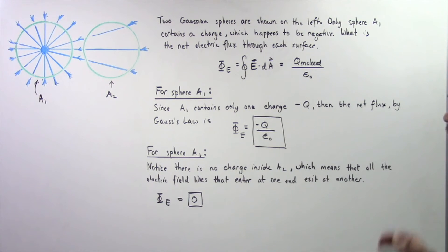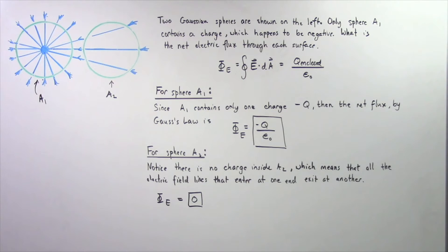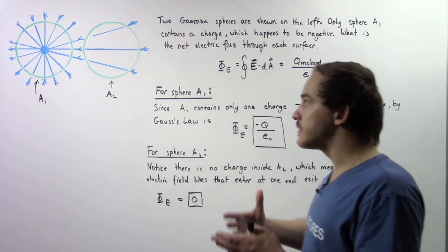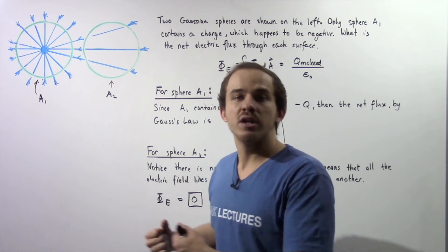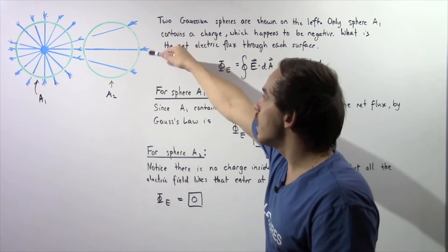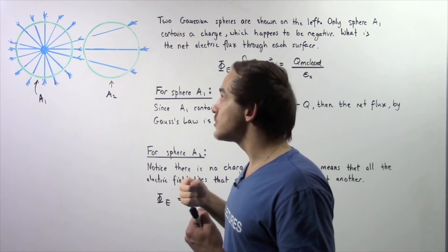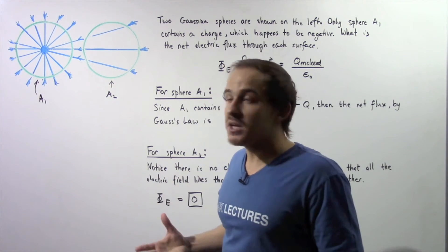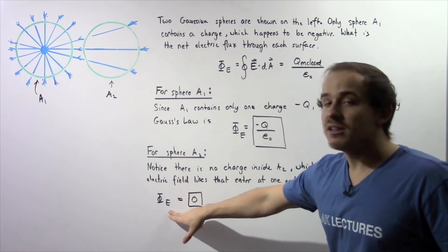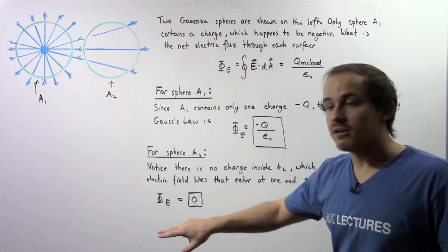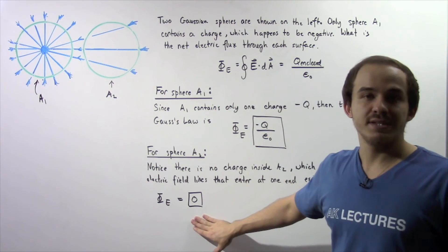Notice, there is no charge inside sphere A2, which basically means that all the electric field lines that will be coming into that sphere will come out of that sphere at the other end as shown. So, the net number of lines going in will be zero because those same lines that are going in come out. So, the electric flux or the net electric flux through sphere A2 is given to be zero.